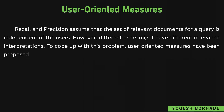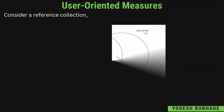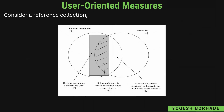Unlike recall and precision, user-oriented measures consider the user. Before looking at the different measures, you have to understand this diagram, because using this diagram and its notations we will be forming the formulas. Consider two sets: the first set is the set of relevant documents, denoted by mod of R, and the second set is the answer set — the set of answers — denoted by mod of A.